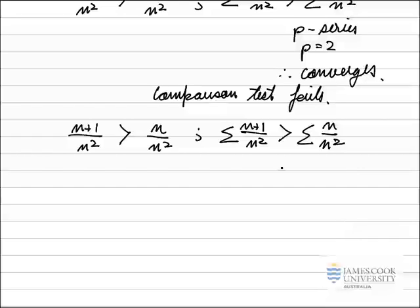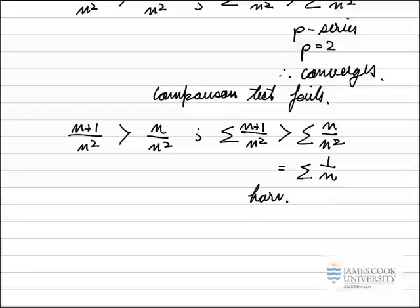The series on the right hand side, n over n squared, is equal to the sum of 1 over n when I cancel out a common factor of n. That series is our harmonic series, and we know the harmonic series diverges.